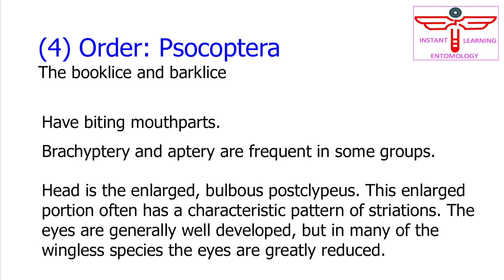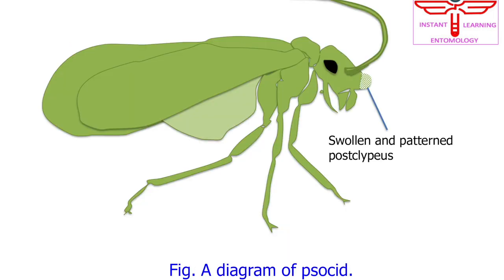Socoptera have biting mouthparts. Brachyptery and aptery are frequent in some groups. The head has an enlarged bulbous postclypeus, which often has a characteristic pattern of striations. The eyes are generally well developed, but in many of the wingless species the eyes are greatly reduced.